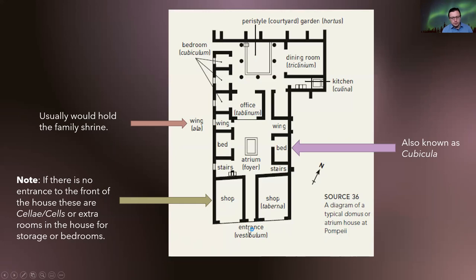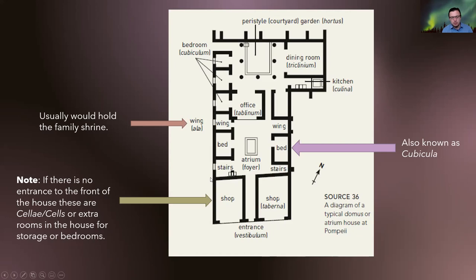We enter through the fauces — F-A-U-C-E-S — the throat of the house. It's closed in just like a throat would be. Typically on either side of the throat you have two rooms. On this map they open up to the street — these are the shops of the house. The house might be growing something in the garden at the back to sell in the shops, or they might have businesses elsewhere and sell goods from the house. This is quite a public affair — housing in Pompeii and Herculaneum was not just a private thing.